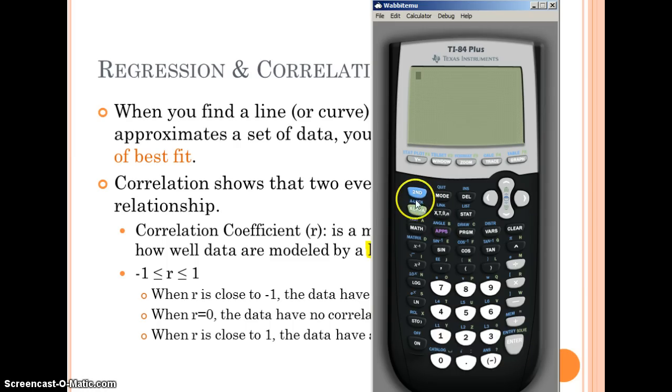The last thing we're going to do is turn our diagnostic on. Go second and the zero button to get to our catalog. You can either scroll down to diagnostic, or since we have our alpha lock on, we can find d which is x to the negative 1, scroll down to find diagnostic on. Once you have the arrow next to it, press enter. It'll bring you back to your main screen and press enter again. Now we have our diagnostic on and we're ready to go.